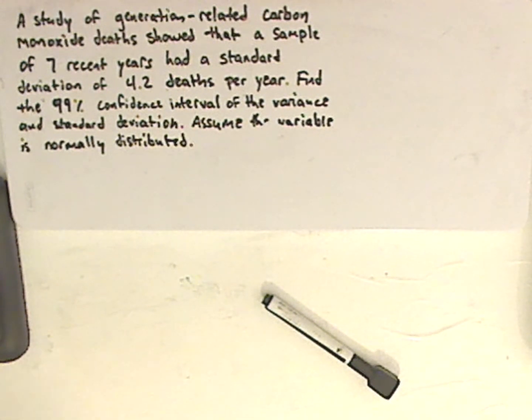So let me read the problem to you, and then you can try on your own. A study of generation-related carbon monoxide deaths showed that a sample of seven recent years had a standard deviation of 4.2 deaths per year. Find the 99% confidence interval of the variance and standard deviation. Assume that the variable is normally distributed.